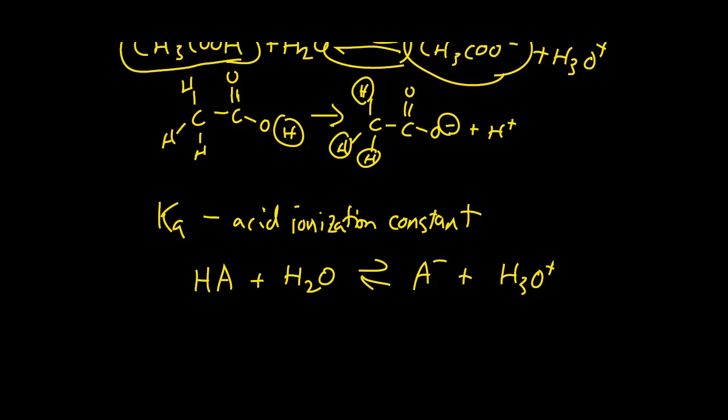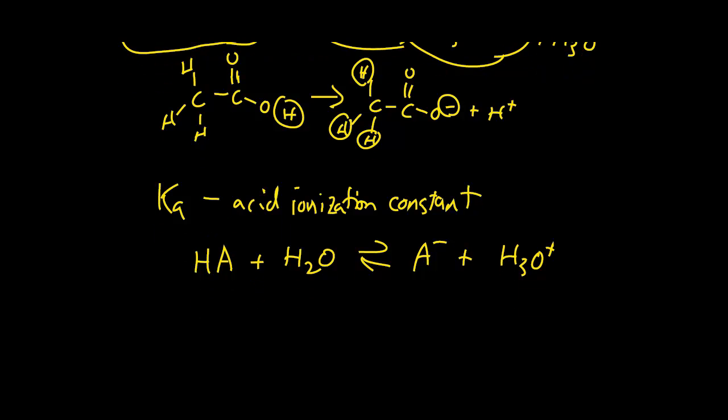And the A means that this could just be any acid or any weak acid. Because again, the strong ones, you wouldn't have that equilibrium. It would just be an arrow going all the way to the right.